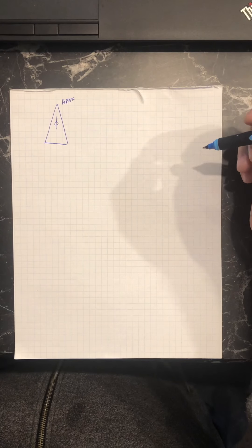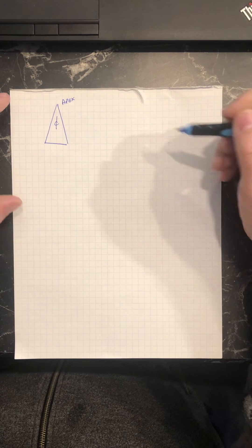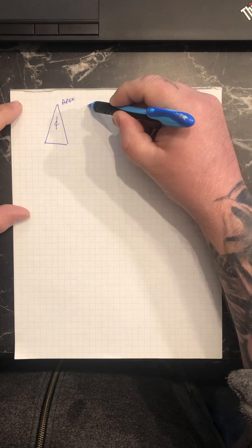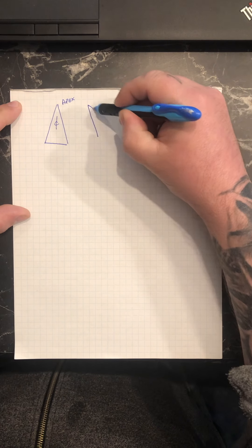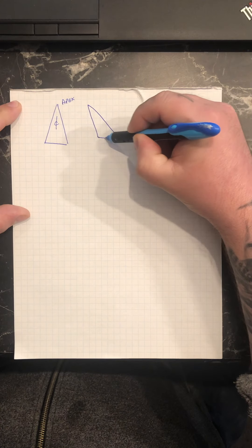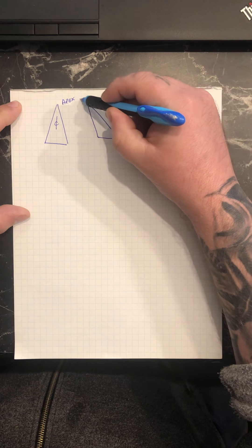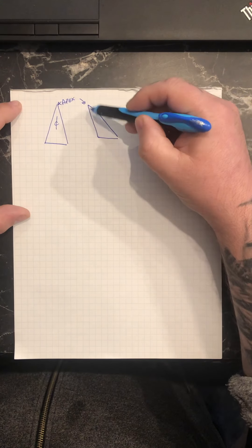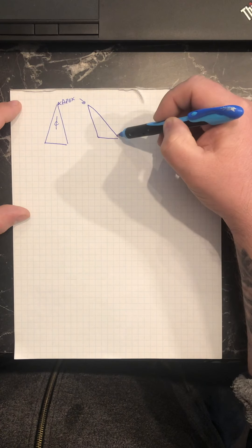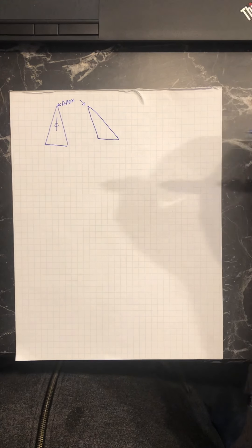And question number two, what is a scalene or oblique cone? That's going to be one where the apex is off center of its base. So the apex would be outside of or off center of the base.